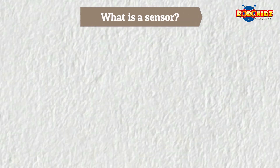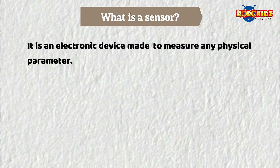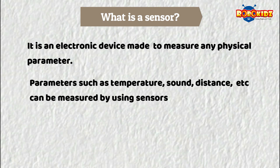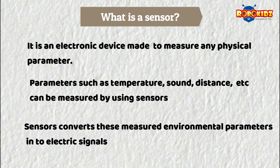First, we need to see what a sensor is. A sensor can be defined as an electronic device made to measure any certain physical parameter. Parameters such as temperature, sound, humidity, and distance can be measured with their respective sensors. Basically, a sensor converts these measured parameters into corresponding electrical signals so that other electronic devices can easily understand them.